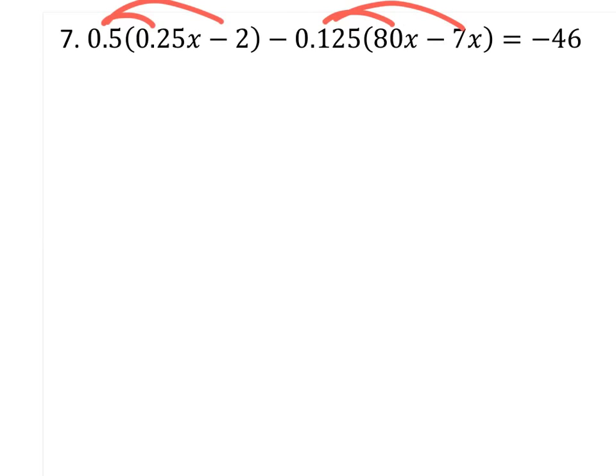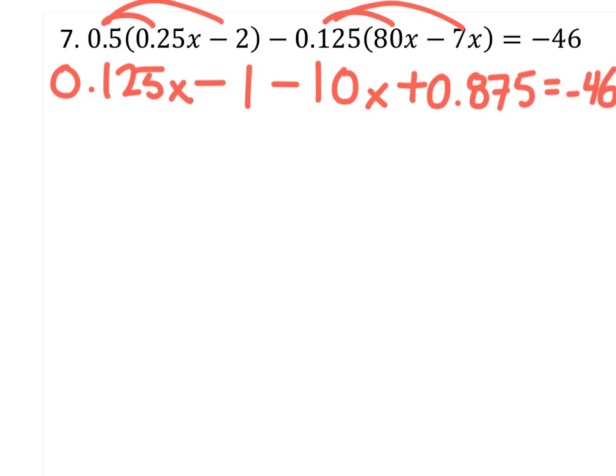So 0.5 times 0.25 would just be half of 0.25. That's 0.125x minus 0.5 times 2 is 1. Minus 0.125 times 80x would give you 10x. Now once again, you've got a negative 0.125 times negative 7x. So that would give you a positive 0.875. And this equals that negative 46.